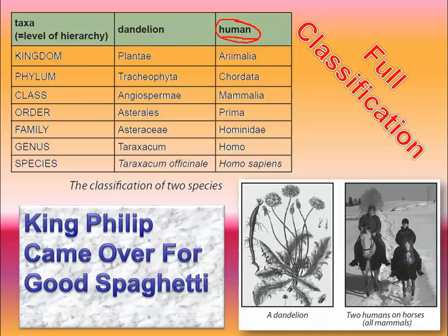Check this out — dandelion. Try to read all these. Dandelions belong to the kingdom called Plantae, the phylum called Tracheophyta, the class called Angiospermae, the order called Asterales, the family called Asteraceae, the genus called Taraxacum, and the species officinale. Taraxacum officinale. I'm pretty sure if you spell this 90% correct, you'll still be okay. But that's how we name all the different living things that are out there.